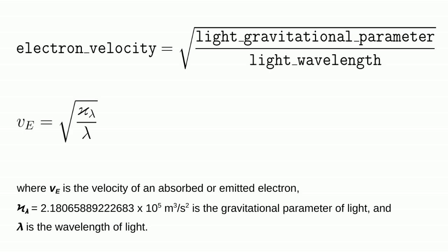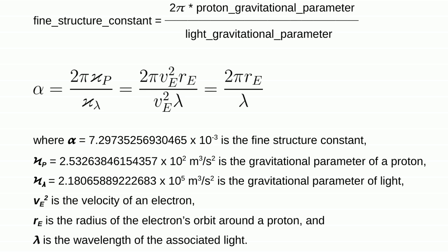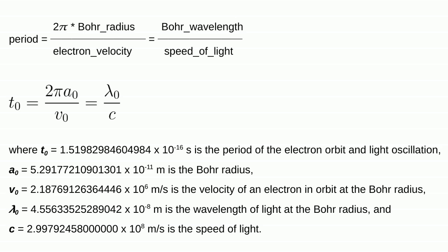For any given wavelength of light, the velocity of the corresponding electron before emission or after absorption is equal to the square root of the gravitational parameter of light divided by the wavelength of light. The fine structure constant represents the transition between the circumference of an electron's orbit around a proton and the wavelength of corresponding light oscillations. Only at the Bohr radius does the period of the electron's orbit exactly equal the period of the corresponding light wave. Consequently, only at the Bohr radius can an electron absorb or emit light.